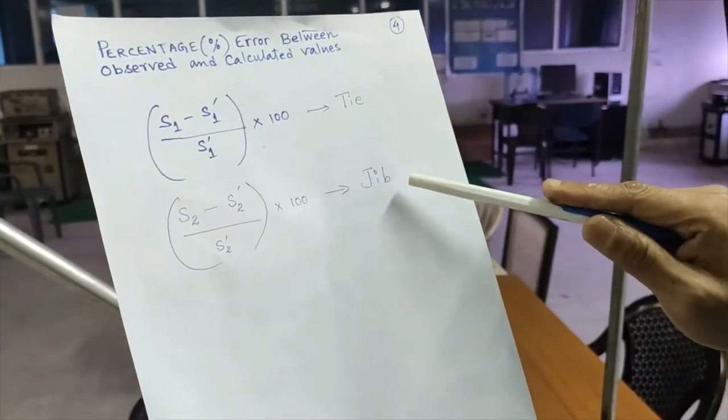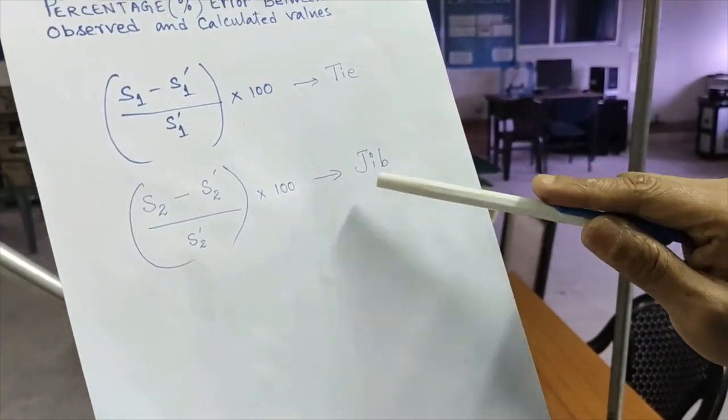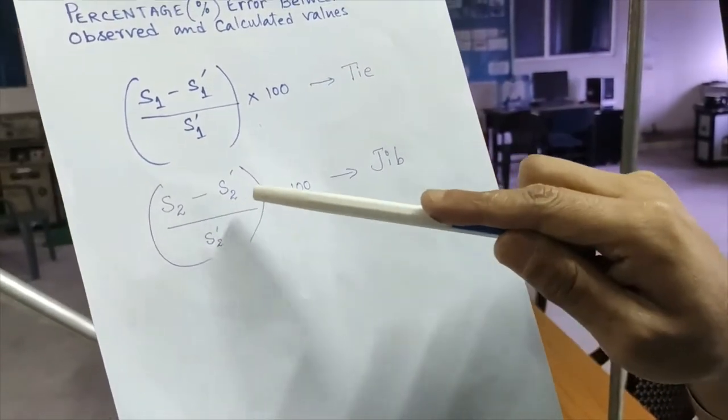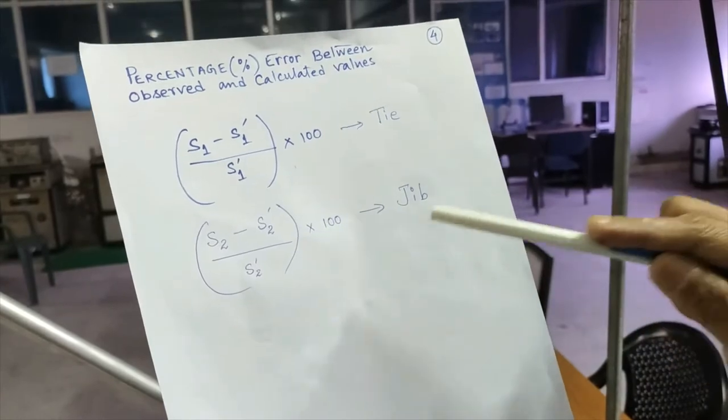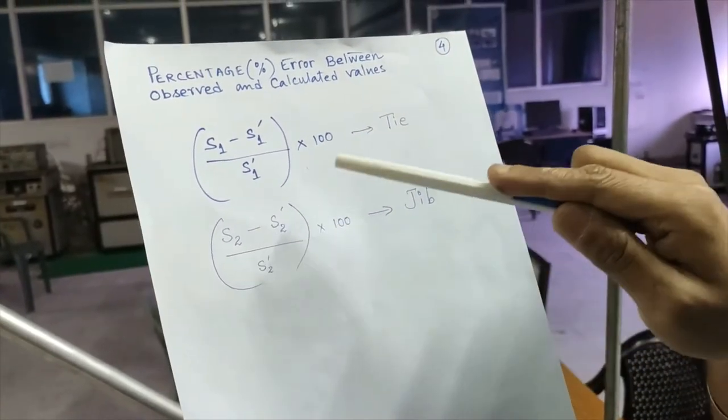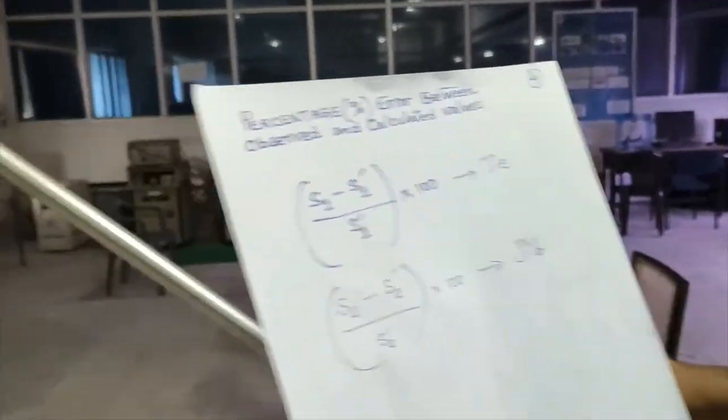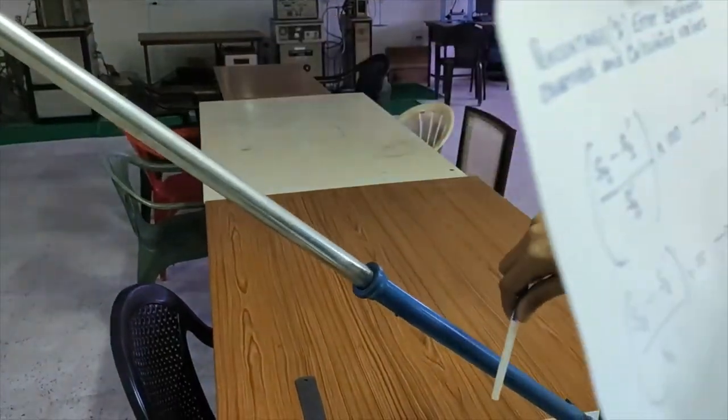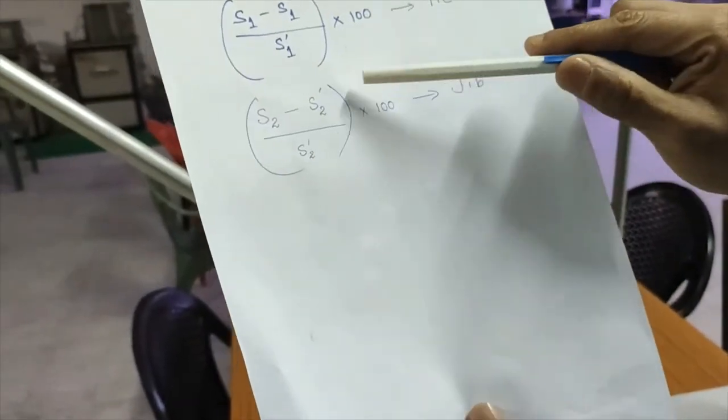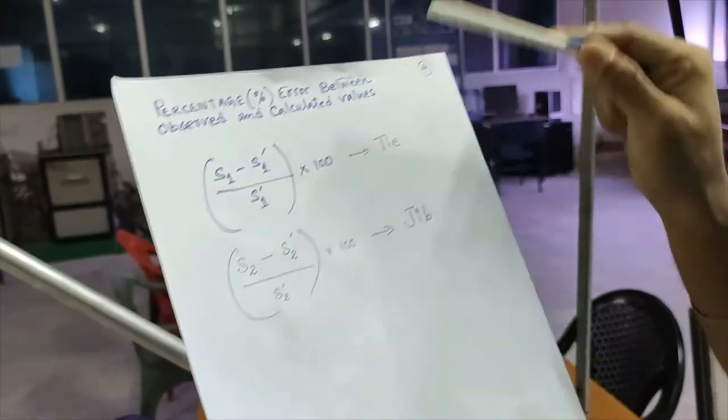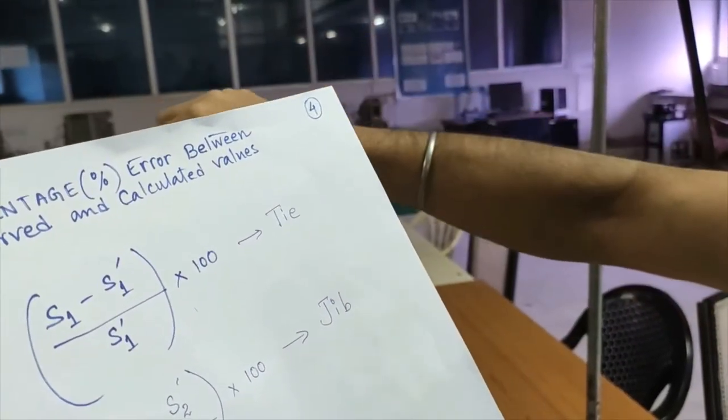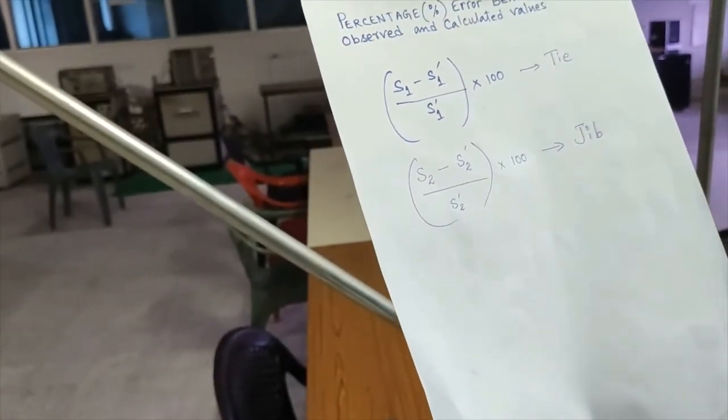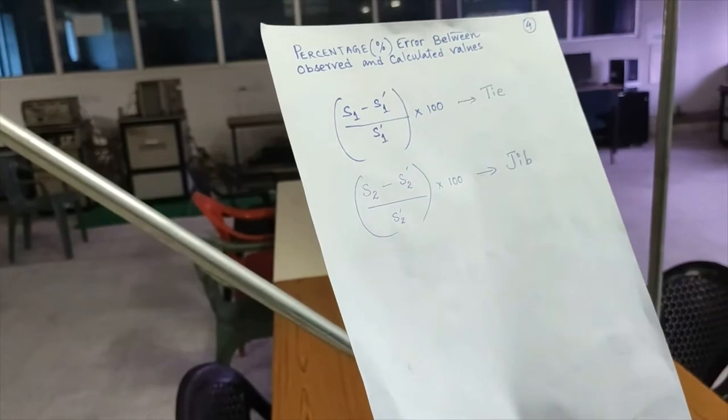Similarly for jib member also, we will get the percentage error in this way: S2 minus S2 dash divided by S2 dash into 100. Where S2 is the compressive force measured by spring balance in jib member. S2 dash is the correct value for compressive force calculated by means of similar triangle property.